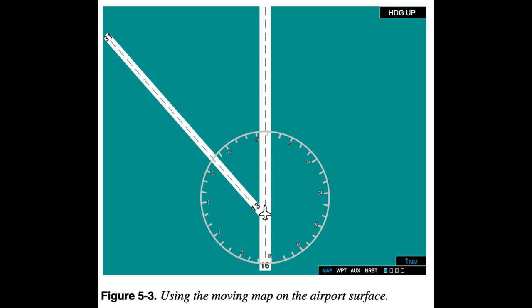Identifying Controlled Airspace. Most Moving Map displays can portray surrounding airspace as well as the vertical limits of each airspace segment. This feature is particularly useful during visual flight rules, VFR, flights, but can also serve to remind you of speed restrictions that apply to airspace transitions during instrument flight rules, IFR, flight.